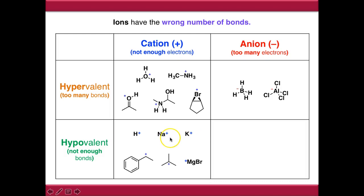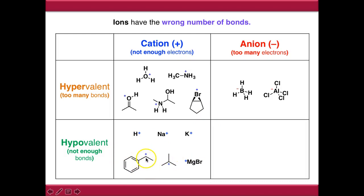They have lost electrons, presumably to the anion in the salt, so they are hypovalent cations. We'll also come across hypovalent carbocations - things like t-butyl cation, where we have three substituents on carbon and an empty P orbital, which is causing it to be cationic, but we have a lack of electrons here.